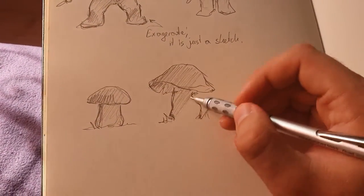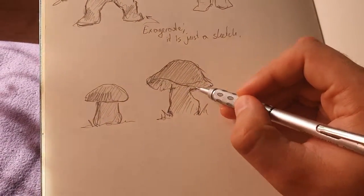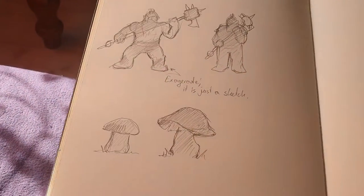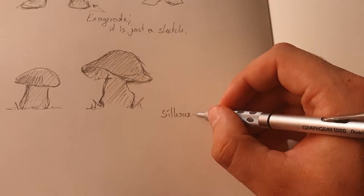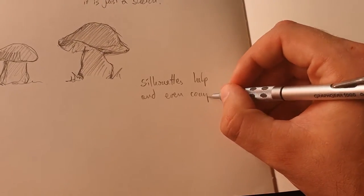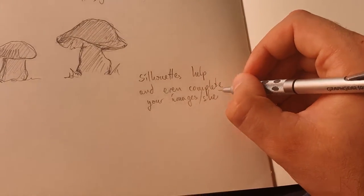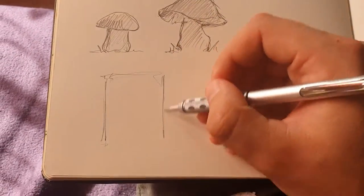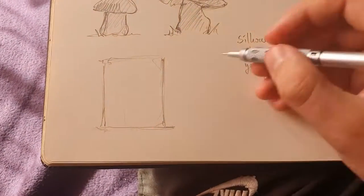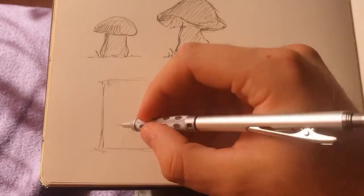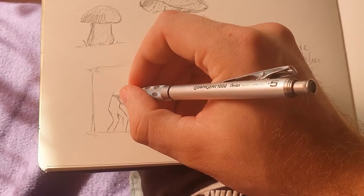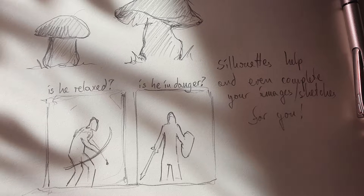Another important point about silhouettes: they help you finish your images without fully rendering the details or even the background — they help you complete the composition of an image. Here, for example, I've done two silhouettes in little boxes. You can see a man and already from his silhouette alone you can read that he is tense. The second silhouette shows a warrior knight who is relaxed. You don't need to add the background to make that clear.